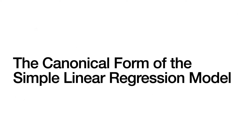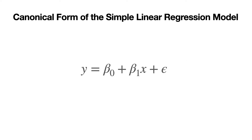Let's first remind ourselves of the canonical form of the simple linear regression model. The simple linear regression model is given by y equal to beta zero plus beta one times x plus epsilon. As we said in a previous lecture video, we can always express a simple linear regression model in this form.